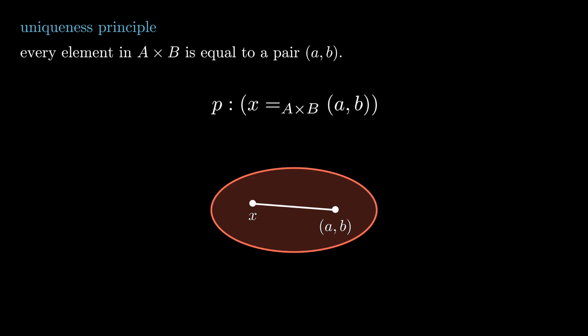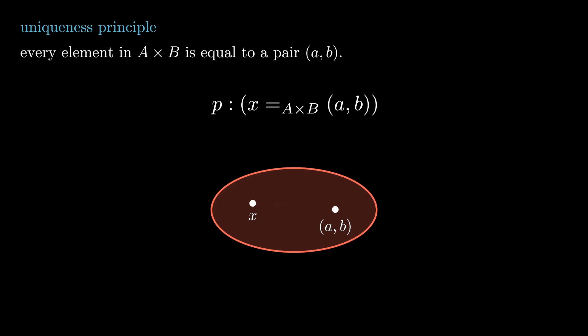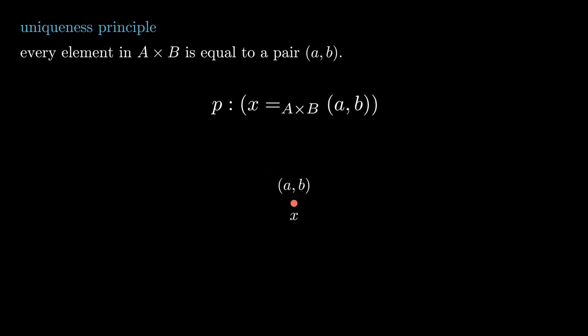And yes, when we are talking about sets, the type theoretic and set theoretic definitions are equivalent. Spelled out, if we were to regard a set as a space, then it is totally disconnected. The only paths are the constant ones from an element to itself. So, equality in the sense of type theory collapses to the idea that two elements are equal if and only if they are definitionally the same.